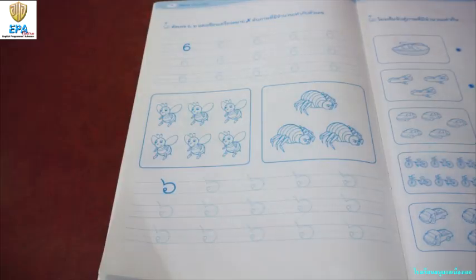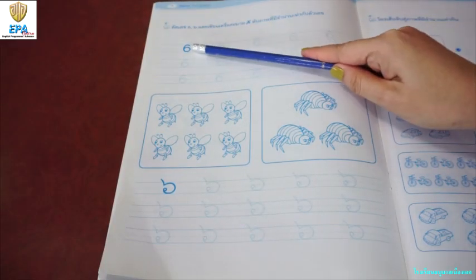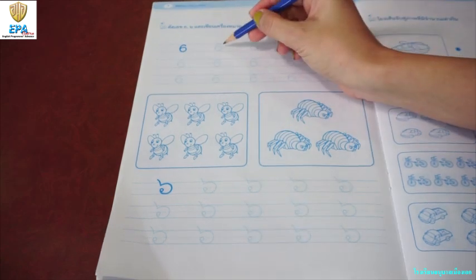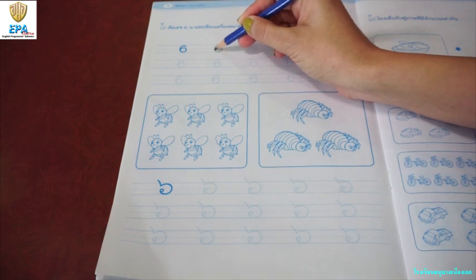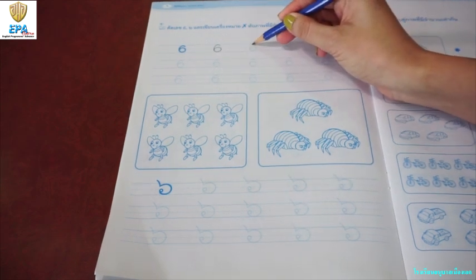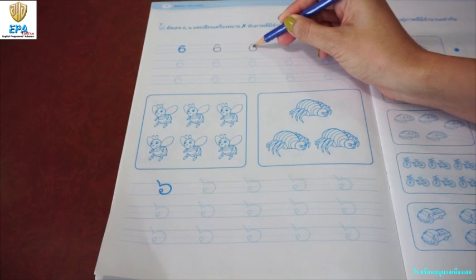Let's learn numbers and each quantity. This is number 6. To write number 6, make a curve, then make a loop. One more time, make a curve, and then make a loop.